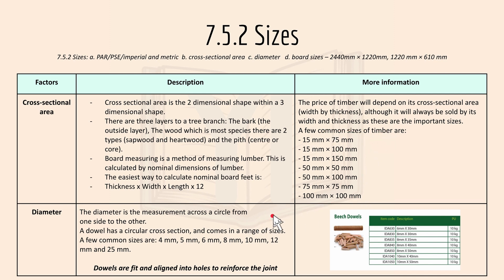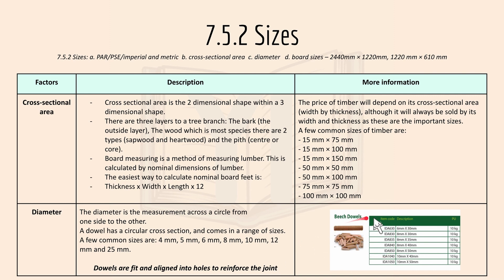The diameter is a measurement across a circle from one side to another. A dowel has a circular cross-section and comes in a range of sizes. A few common sizes are 4mm, 5mm, 6mm, 8mm, 10mm, 12mm, and 25mm. Dowels are fitted and aligned into holes to reinforce the joint.